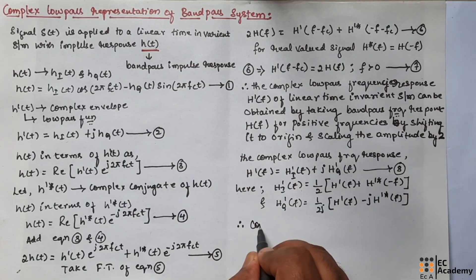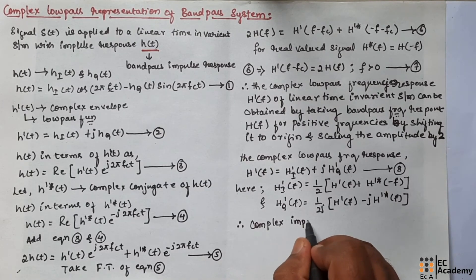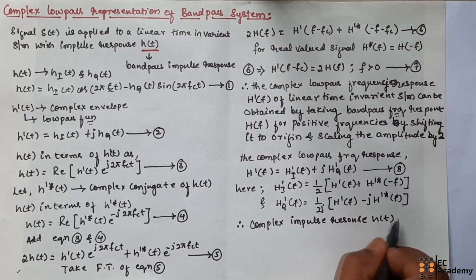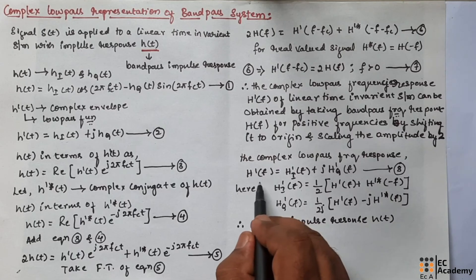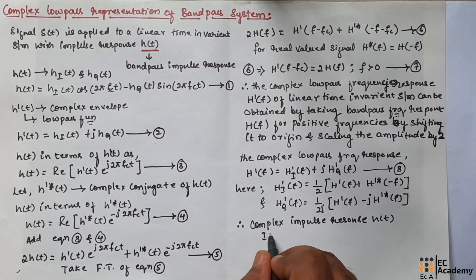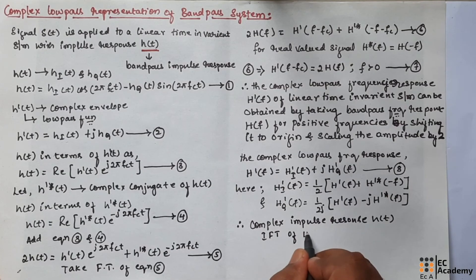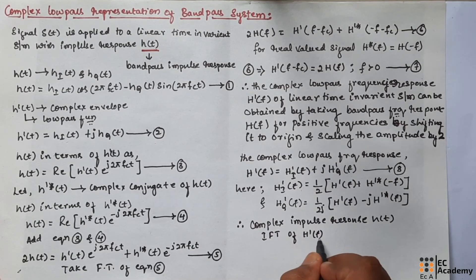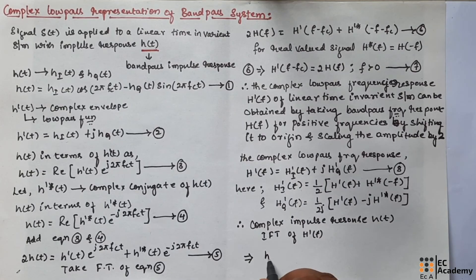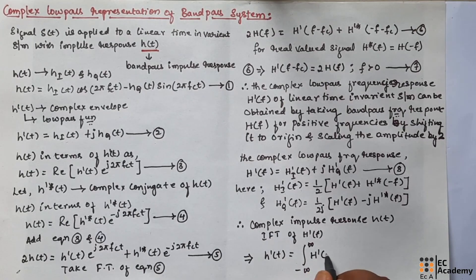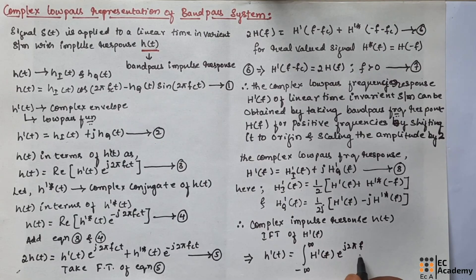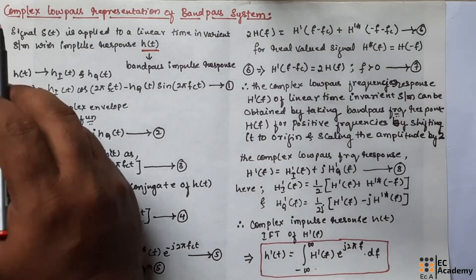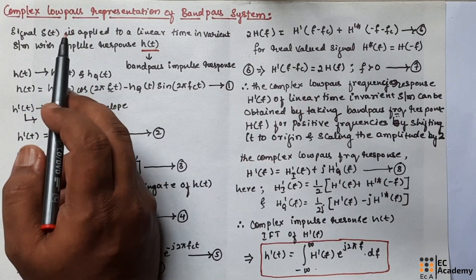Therefore, the complex impulse response H of t of the band pass system is obtained by taking the inverse Fourier transform of H̃(f). Taking the inverse Fourier transform of H̃(f), we obtain: H̃(t) = ∫ from −∞ to ∞ H̃(f) · e^(j2π f t) df. This concludes the complex low pass representation of band pass systems.